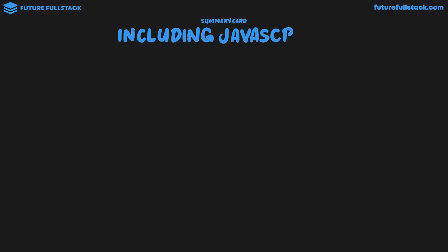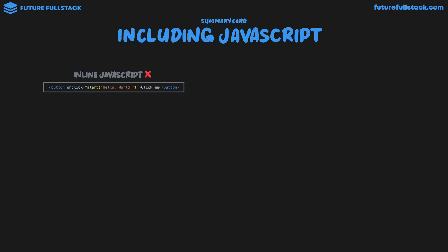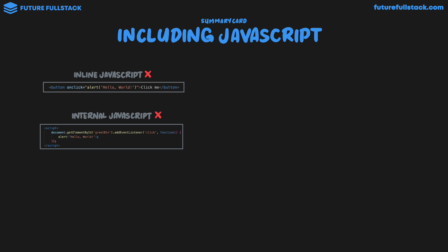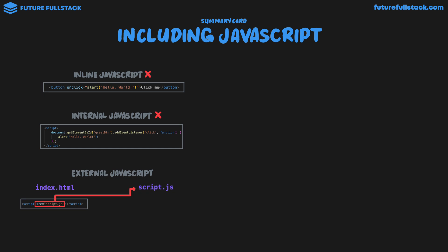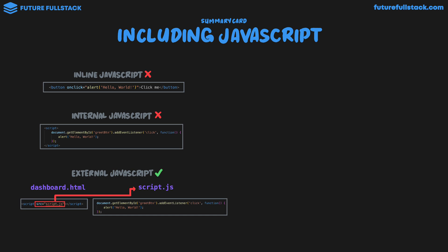Let's wrap up with a summary of including JavaScript. We looked at three methods. Inline JavaScript — JavaScript written using an HTML attribute directly on the tag — is not a good option because JavaScript needs to be duplicated for each HTML element. Internal JavaScript — using a script tag in the HTML document — is also not good because JavaScript logic needs to be duplicated across multiple HTML pages. External JavaScript — having an index.html with script tags containing a source attribute referencing script.js — is the best method because our JavaScript is centrally managed from one file and can be referenced on any HTML page.